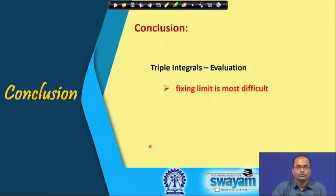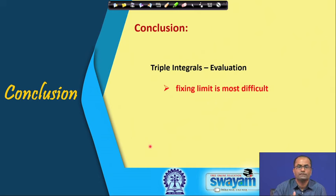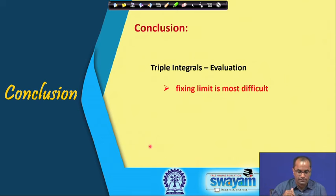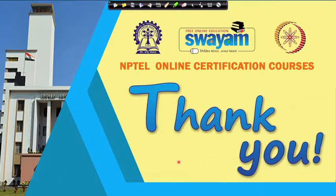In conclusion, we have covered the basic evaluation of triple integrals. The most difficult part is fixing the limits. The key trick: first fix the limit for one direction (e.g., z) by identifying where you enter and exit the volume. Then project the volume onto the remaining plane and apply 2D limit-finding. These are the references used for preparing the lectures — thank you very much.